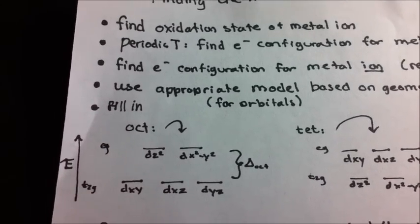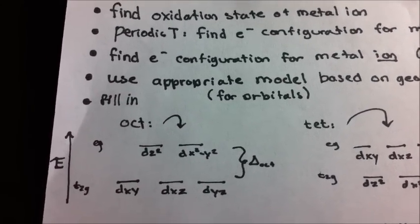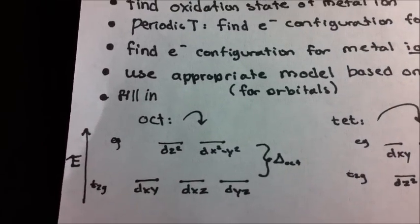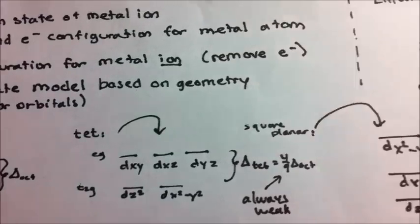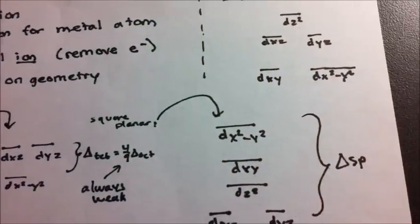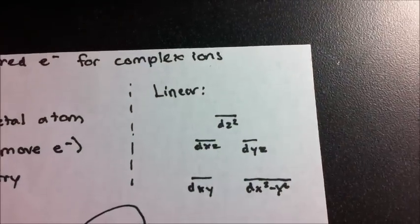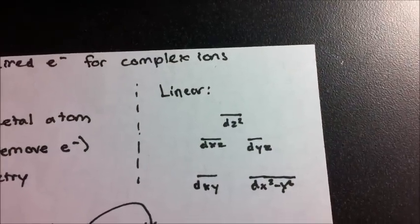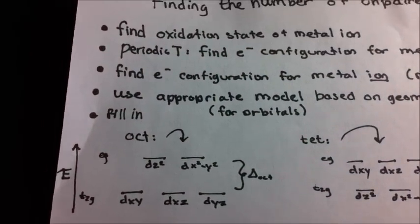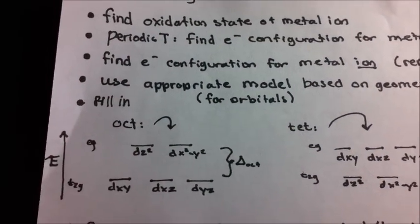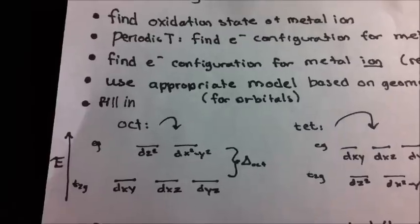These models can have various shapes. For example, you have an octahedral model, a tetrahedral model, a square planar model, and a linear model. These shapes are determined by the way your ligands are arranged around your metal atom.